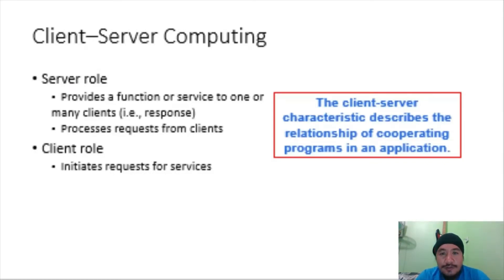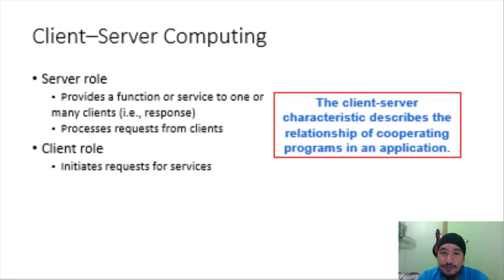The client-server characteristic describes the relationship of cooperating programs in an application. The role of the server is to provide a function or service — that is, a response — to one or many clients. The role of the client is to initiate a request for services.